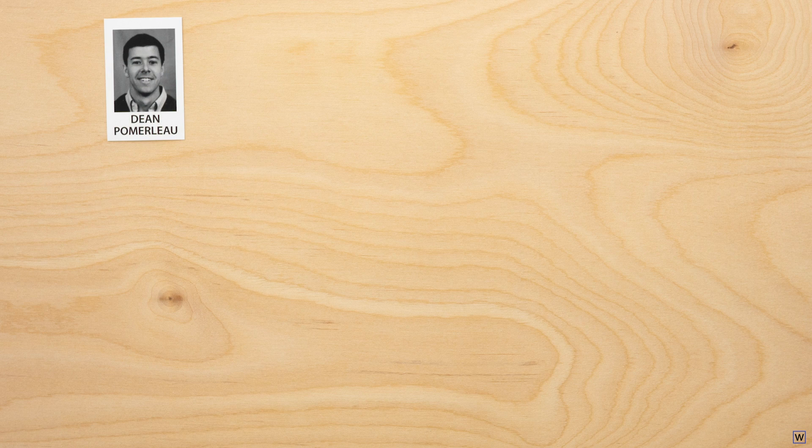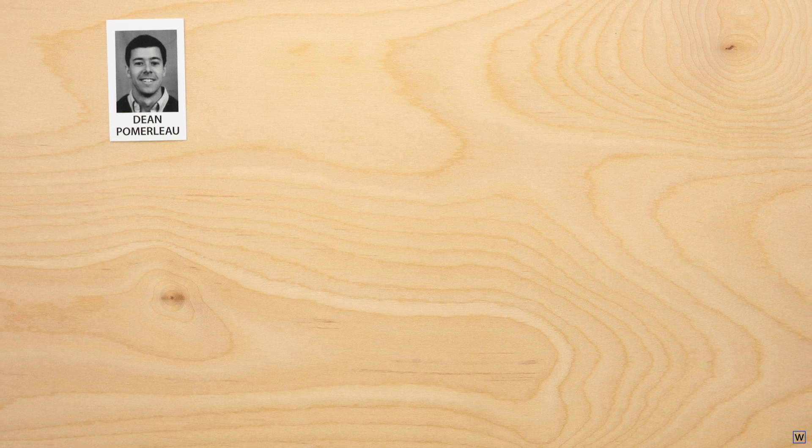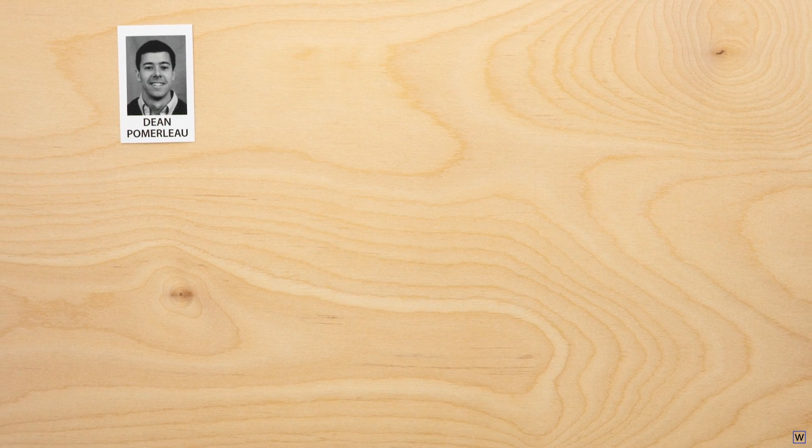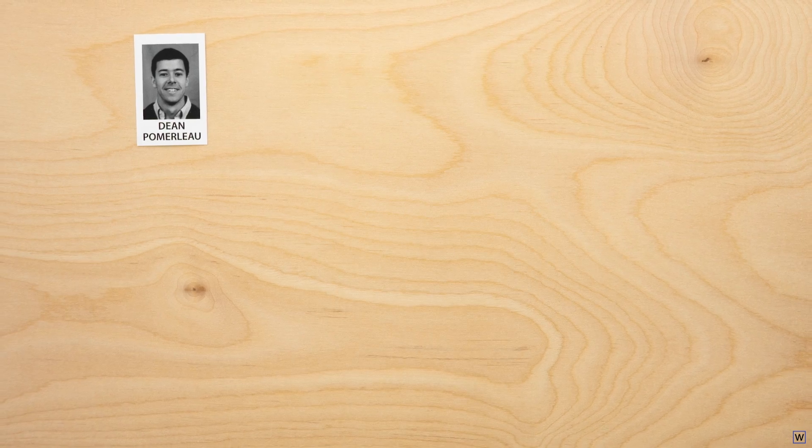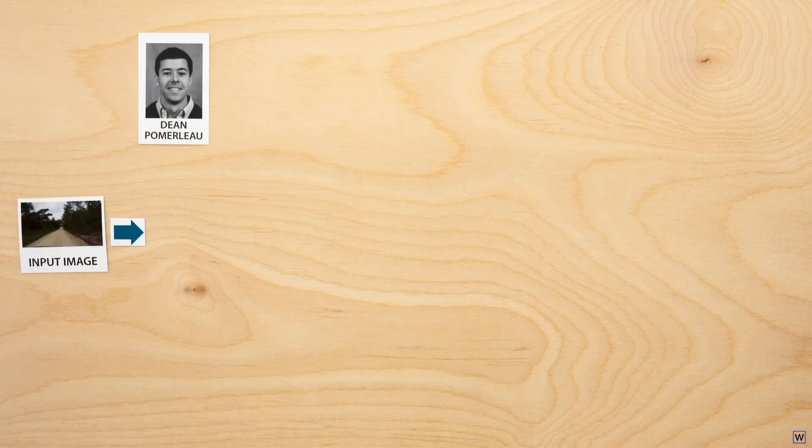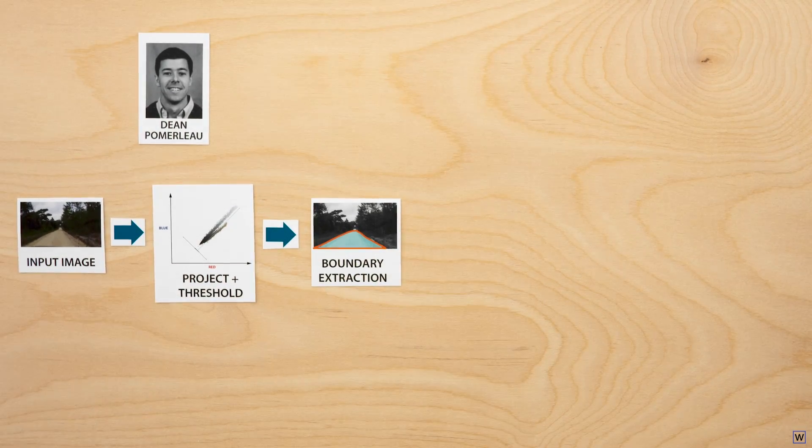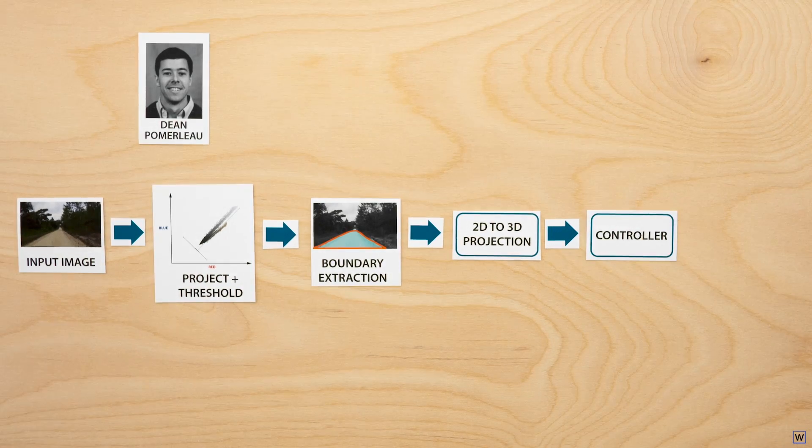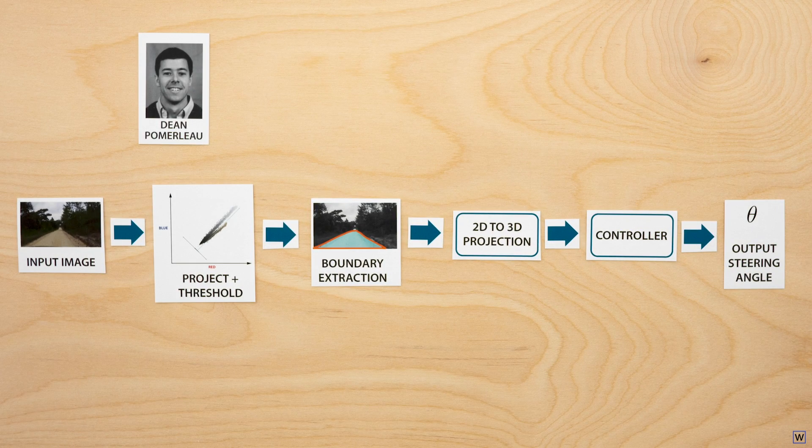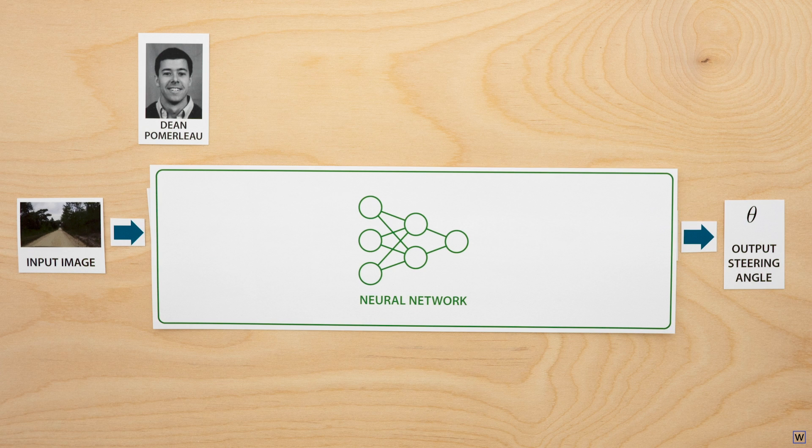Now, when Dean Pomerleau showed up the following year at Carnegie Mellon to begin his PhD, he saw an opportunity to create a dramatically different vision system for autonomous vehicles. Instead of manually programming a whole system, block by block, to map from input images to steering outputs as the ALV team had done, what if we could use an artificial neural network to learn the whole thing?